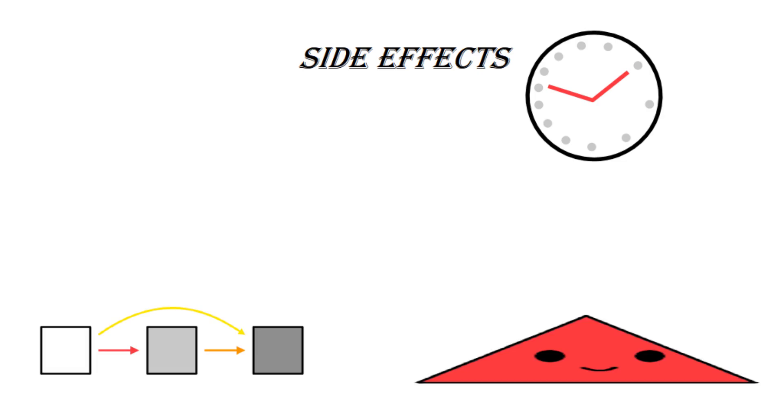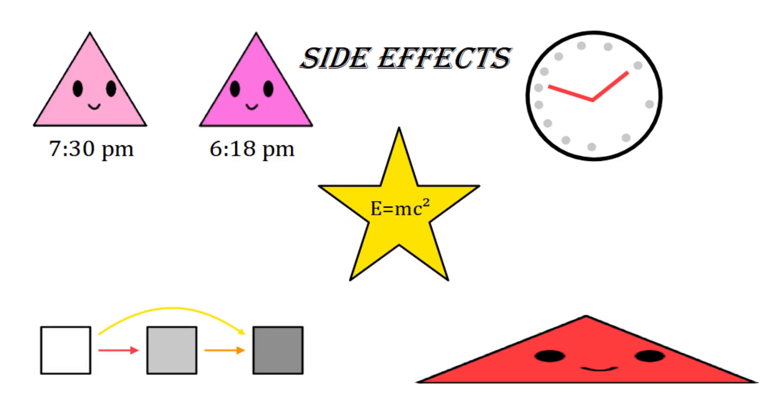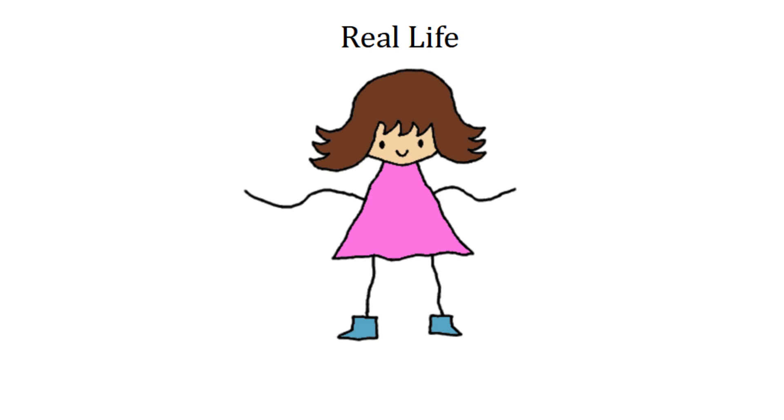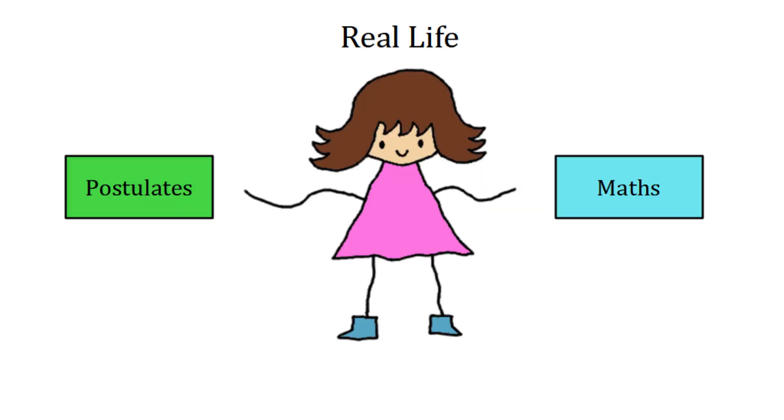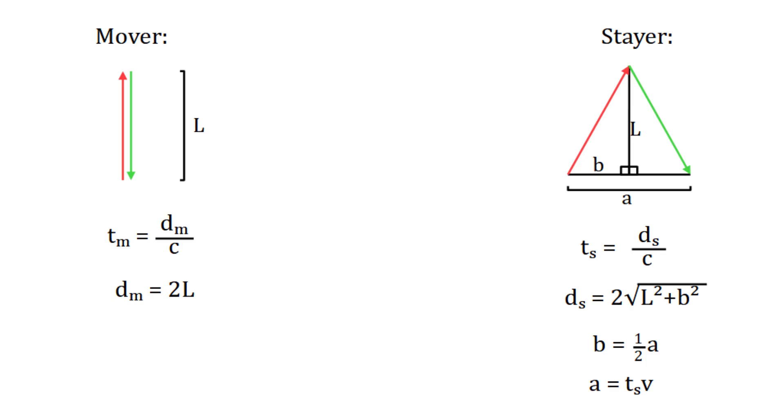The two most important are time dilation and length contraction, but there's also relativistic addition of velocity, relativity of simultaneity, mass energy equivalence, and a lot more. These side effects seem crazy, but they really do happen in real life, and it's possible to compute formulas for them with nothing but the postulates and some basic math. If you want to know how that's done, then I hope you'll join me for the rest of this series, because part two will be about time dilation.